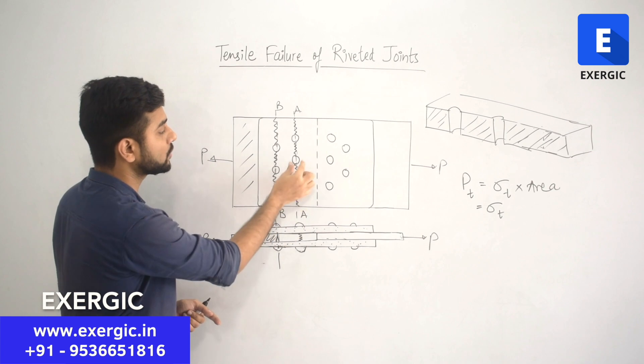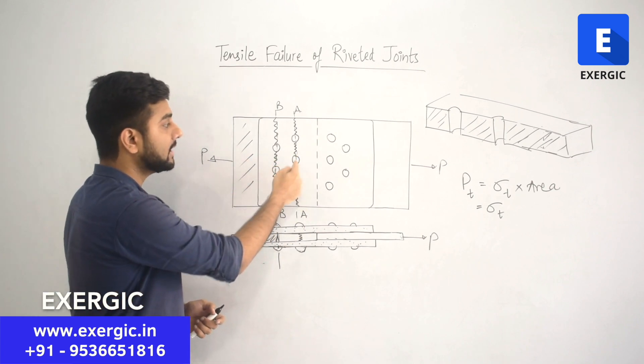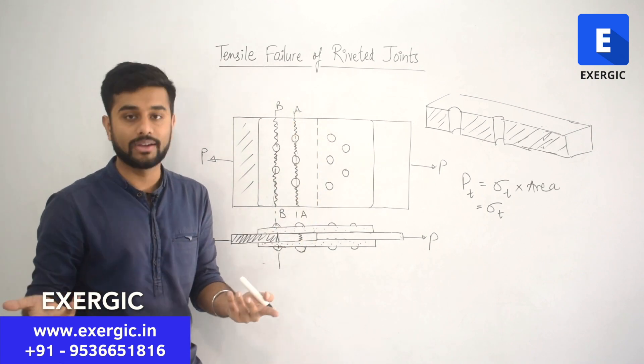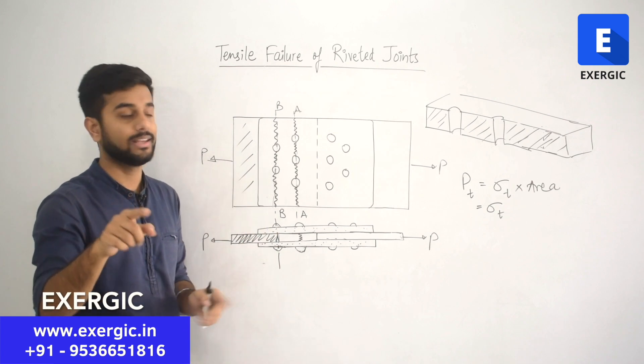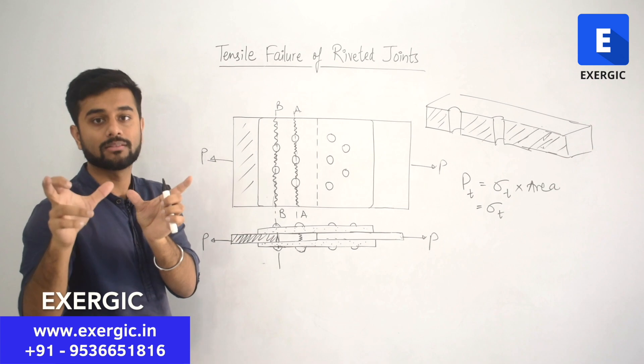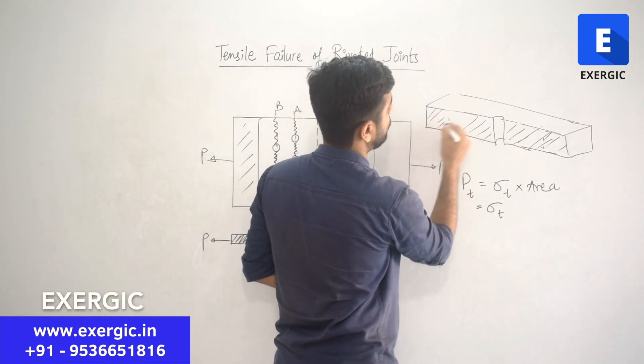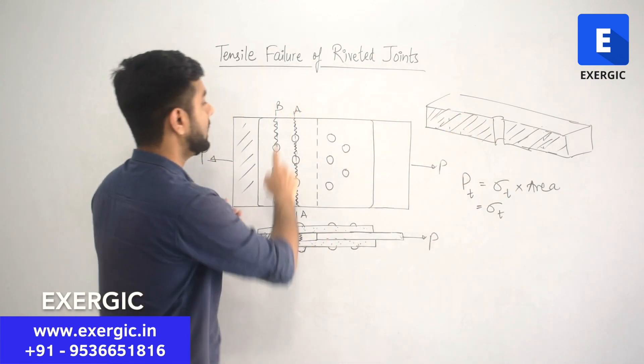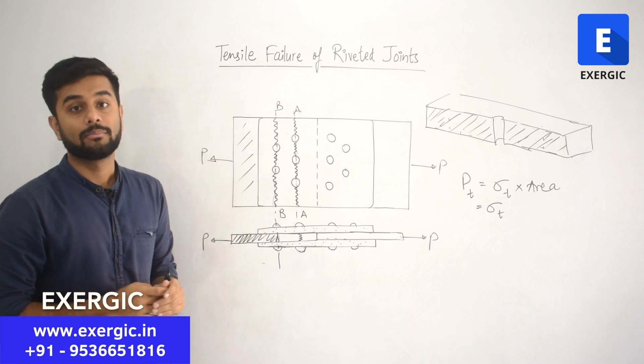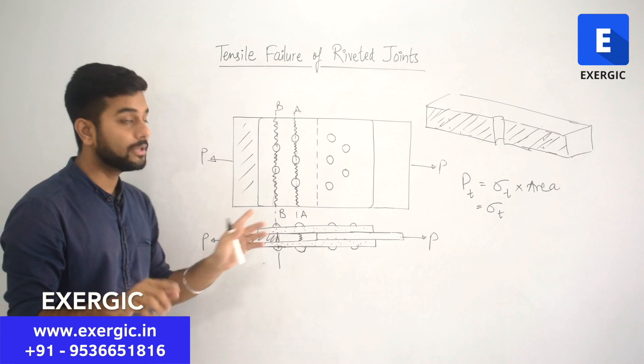Suppose at AA, there was only single rivet. If there was only single rivet, the area of the plate which was needed to be shared will be even more. So, AA will not fail. BB will fail first. If the AA has only one rivet, it has more area of the plate. There will be only one rivet let's say. More area of plate means AA will fail even at higher value of load than BB where there are two rivets. But there you have to again consider the section BB only.